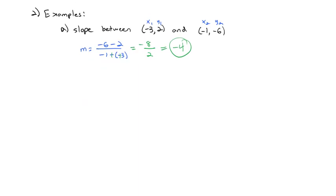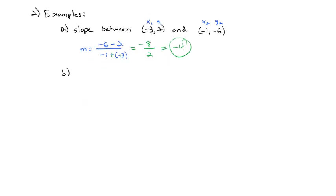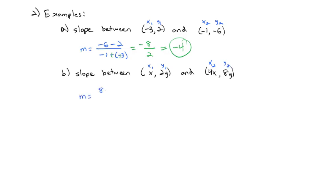We can also change the style of the problem but ask the same question. Find the slope between the point (x, 2y) and the point (4x, 8y). Plugging into the slope formula: y2 is 8y minus y1 which is 2y, divided by x2 of 4x minus x1 of x. When we subtract, we get 6y over 3x, and the 6 over 3 reduces to give us a slope of 2y over x.